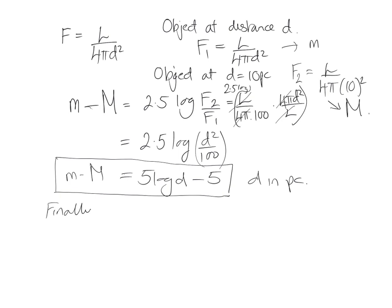Finally, it's useful to know that the magnitude of the sun, the absolute magnitude of the sun, is 4.8. This is the absolute magnitude of the sun.